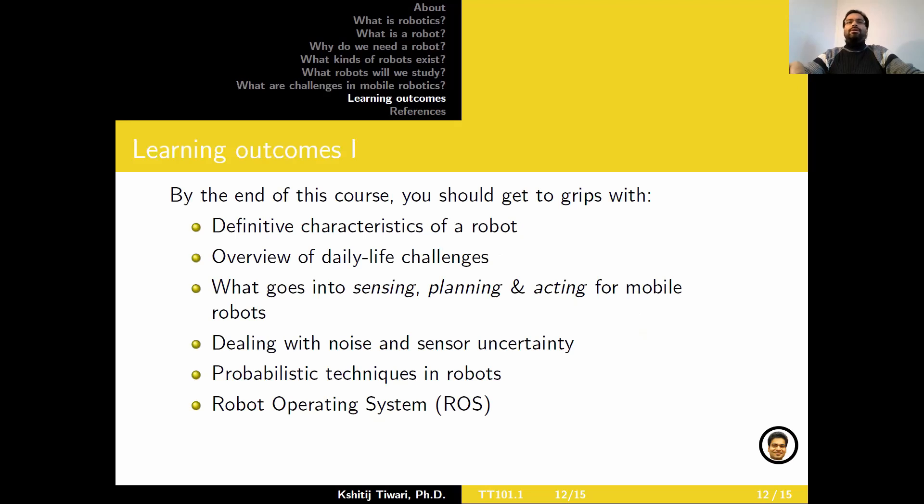So what are some of the learning outcomes of this course? By the end of this course, you should get to grips with what are some of the definitive characteristics of a robot, primarily a mobile robot in this case, some overview of daily life challenges that a robot needs to deal with when you deploy it out in the field, what goes into sensing, planning and acting for a mobile robot. Dealing with noise and sensor uncertainty, because I asked you this question, how much can you trust your sensors? And how do you know that a sensor is lying to you in some sense? There is some noise and uncertainty. Basically, this is asking the question, how do you know what you don't know? Probabilistic techniques in robots which helps in tackling uncertainty, and then a brief introduction to robot operating system, which is the software architecture most commonly used in academics to program your robots and deploy them.